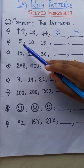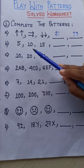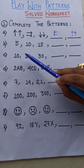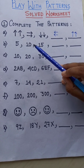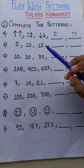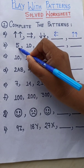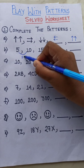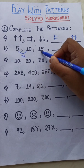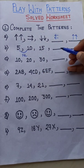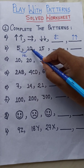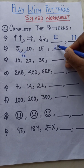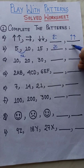In the next one, see: 5, 10, 15. In this type of pattern, you first have to understand the sequence. If you see, it is a table of 5 — 5 ones are 5, 5 twos are 10, 5 threes are 15. So next will be 5 fours are 20, then 5 fives are 25.